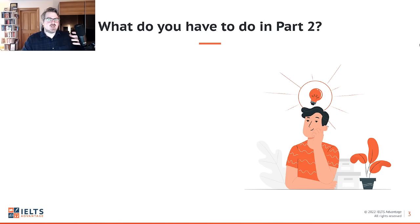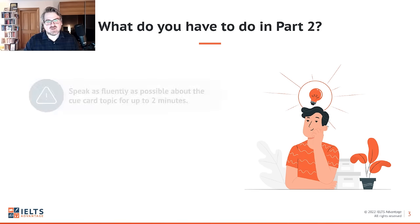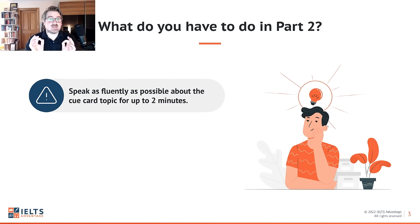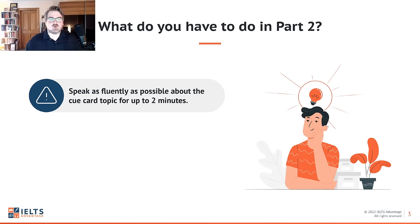Let's look at what you have to do in part two. Even if you've done part two many times, many people do not understand exactly what you must do and what you don't have to do — and it's really what you don't have to do that is the key. What you must do is speak as fluently as possible about the cue card topic for up to two minutes. The cue card topic is the main topic at the top of the cue card.